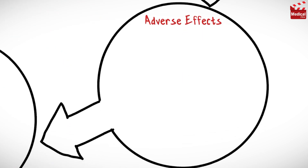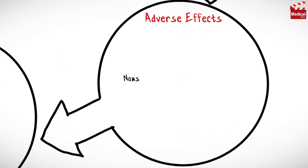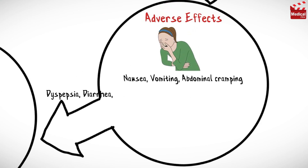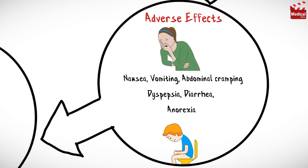Common side effects of valproic acid include nausea and vomiting, abdominal cramping, dyspepsia, diarrhea, and anorexia.